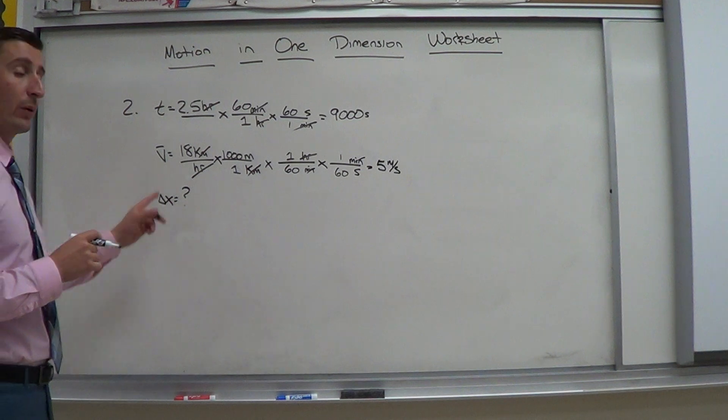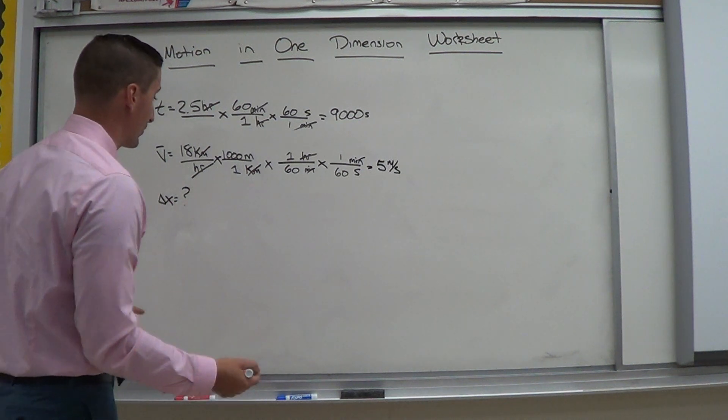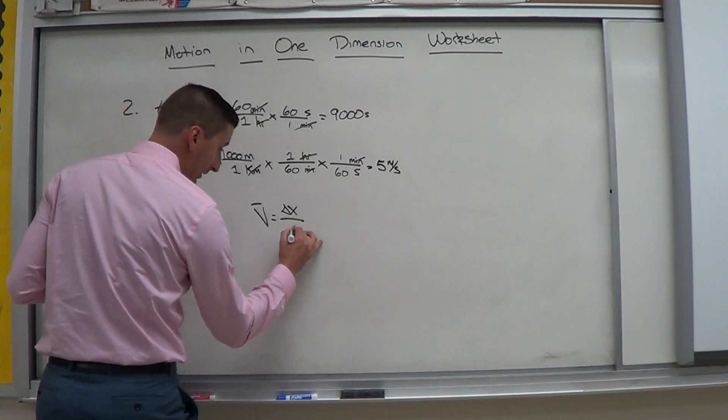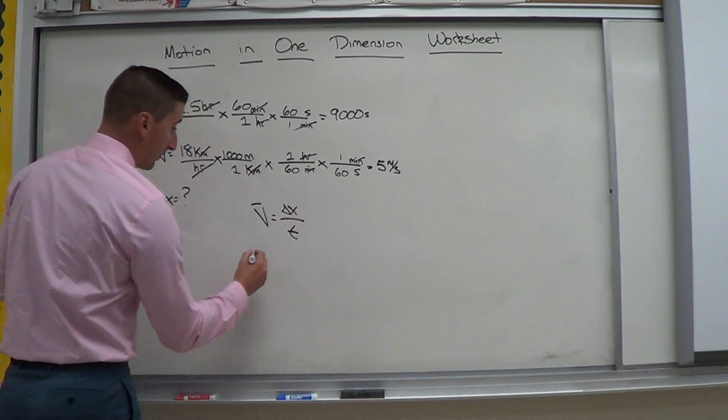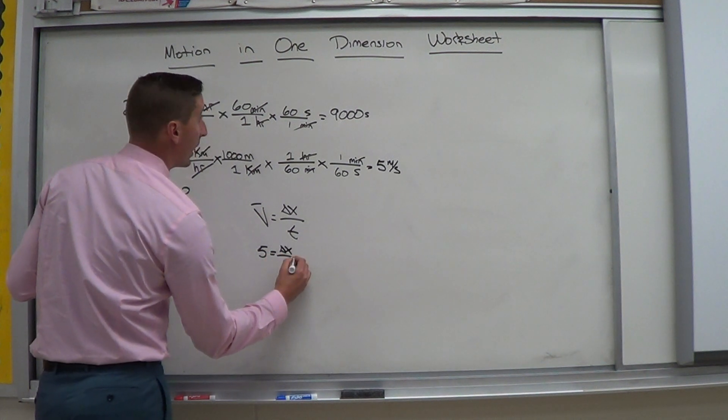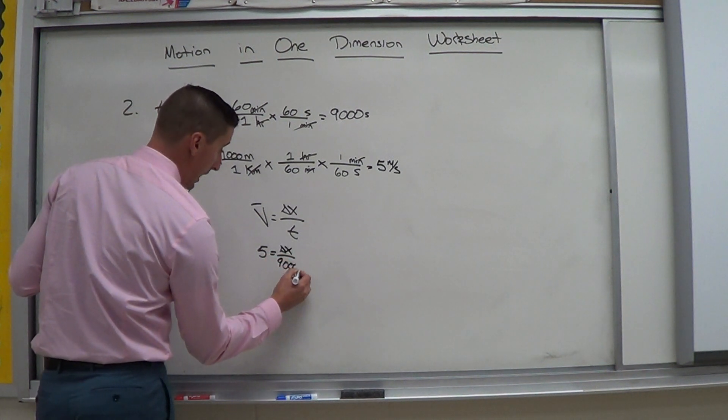Again, I'm dealing with average velocity. I use my average velocity definition. Average velocity equals delta x over t. I can plug in. V is 5. Delta x is what I'm looking for. And time is 9,000.